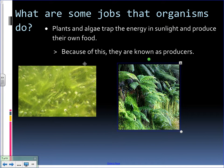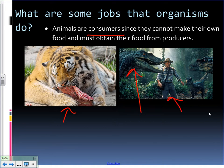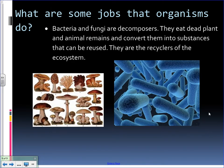Looking at some jobs that organisms do: we have plants that take energy from the sun and make their own food — this is the process of photosynthesis, and they're known as producers. Some animals can't make their own food and need to obtain it from their environment — these are our consumers, anything like a tiger, a velociraptor, or Dr. Grant. Finally, some organisms break down dead and decaying material and actually recycle within the ecosystem — they're known as decomposers. Two main decomposers are things like fungi, including mushrooms, yeasts and molds, and bacteria.